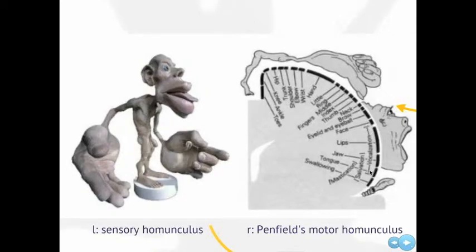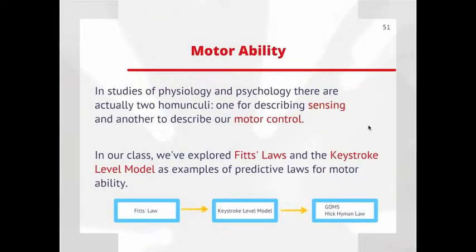In our class, we've explored two different laws to look at examples of how our motor ability is encoded. These are predictive models that help us understand how we might be able to predict a person's ability to carry out a task given by a computer system.